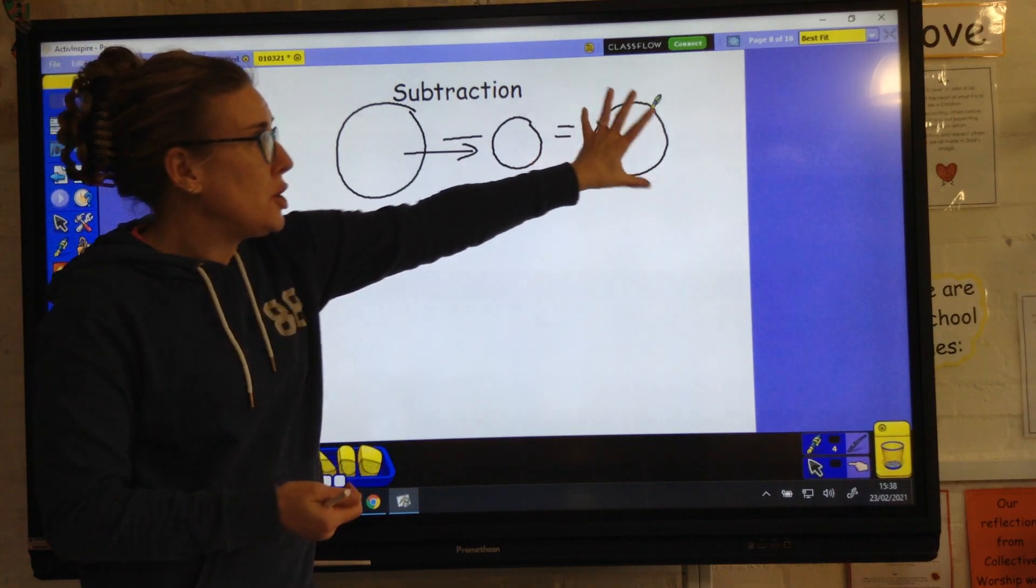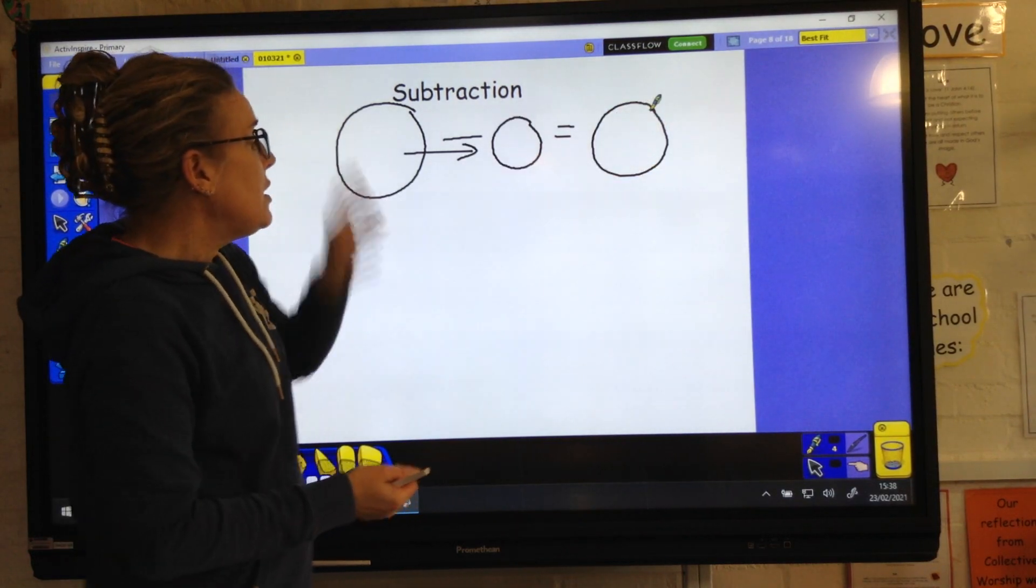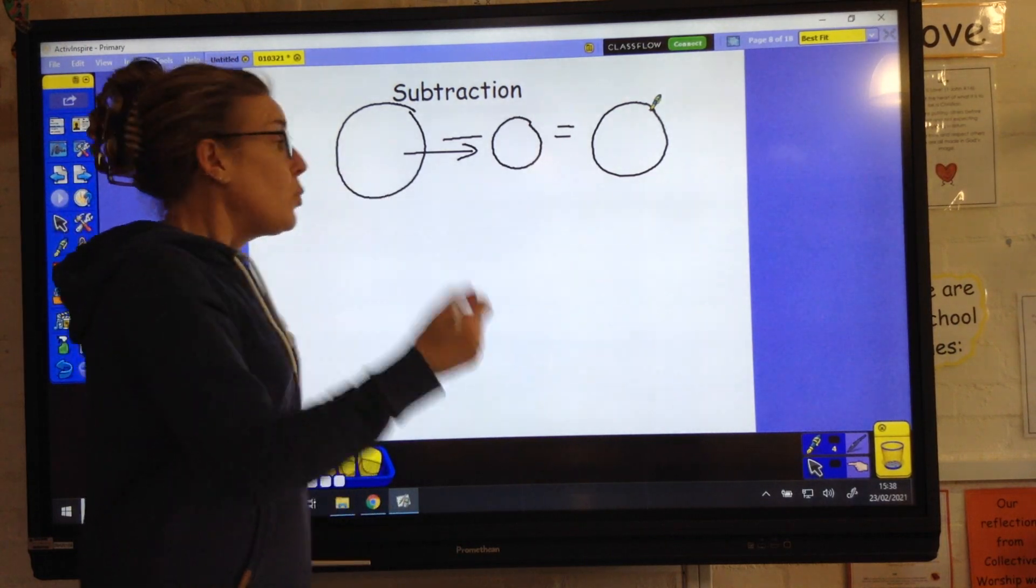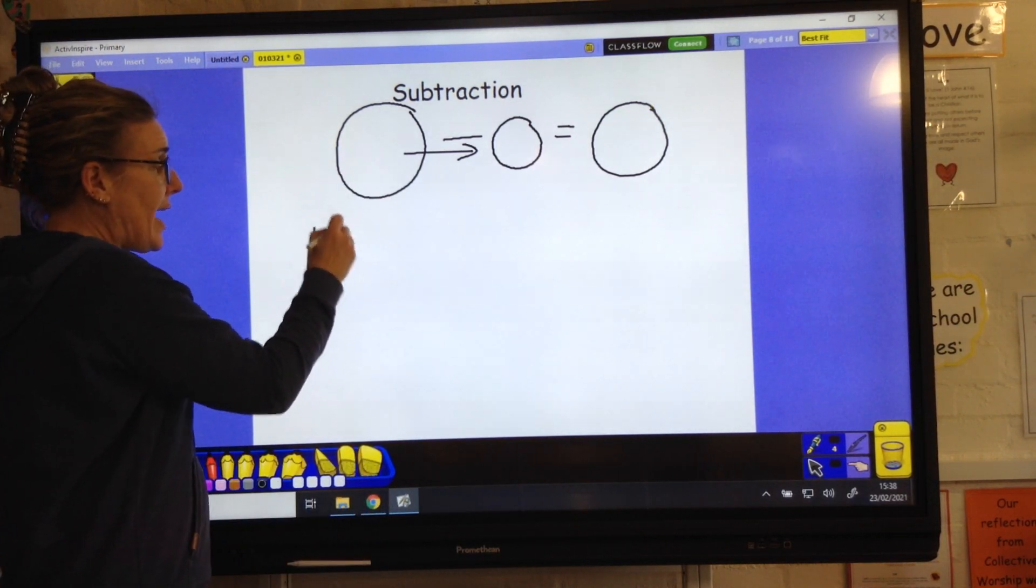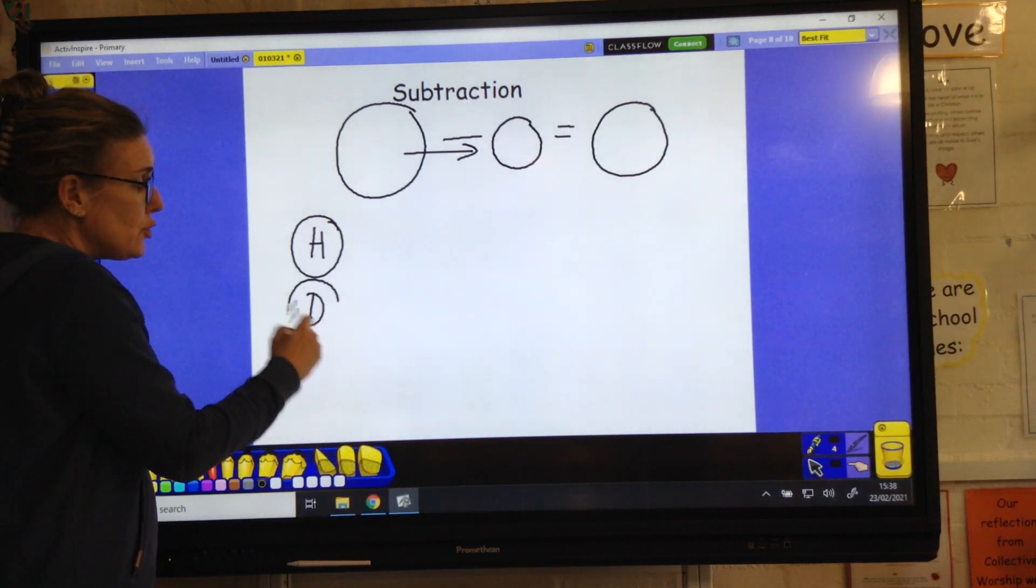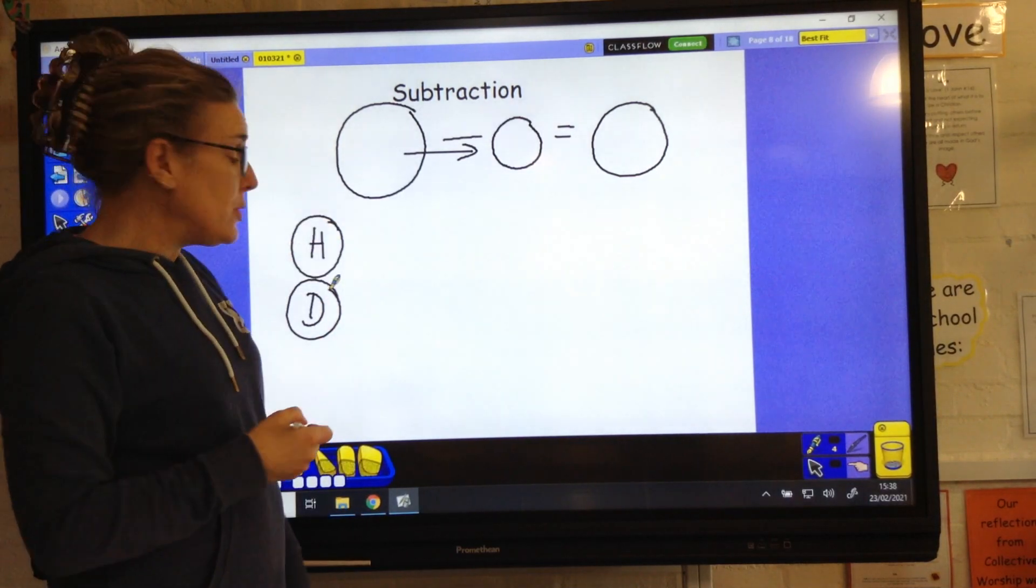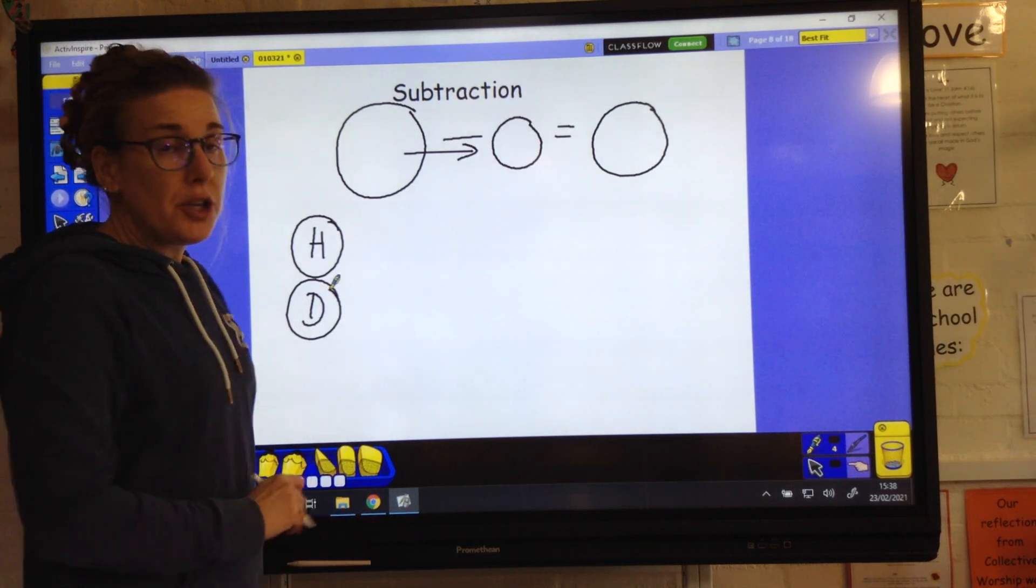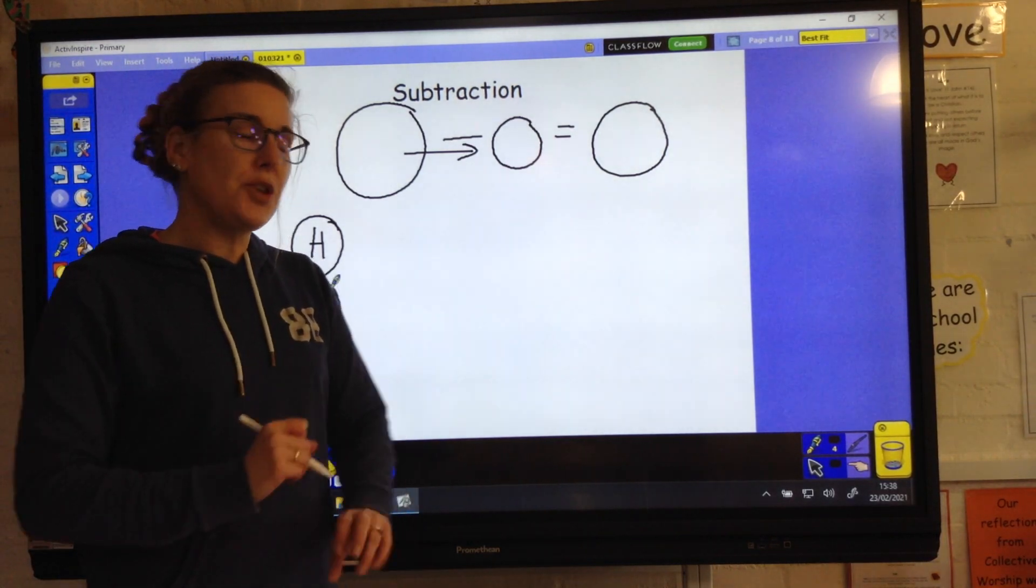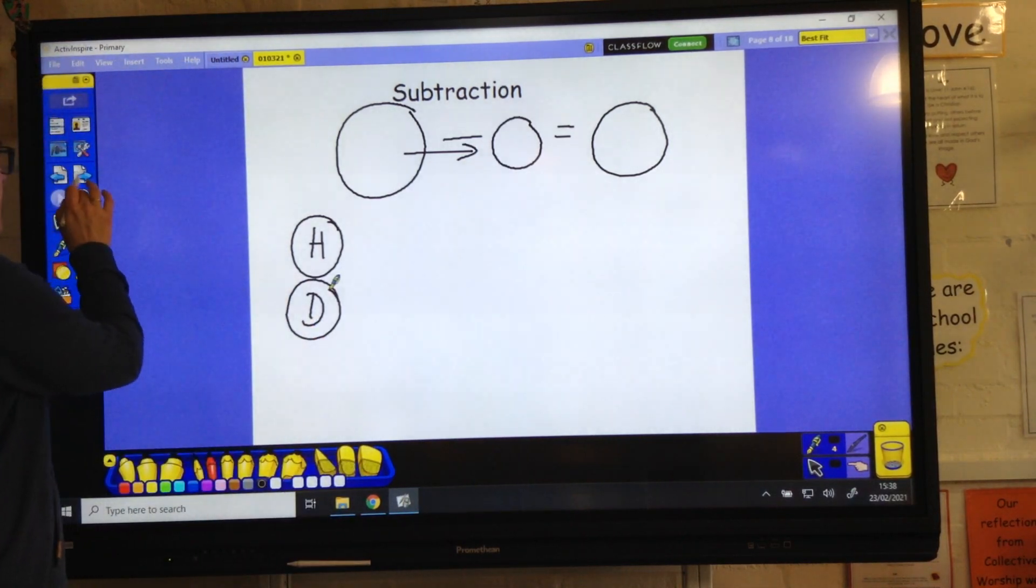In year 2, our answer is always smaller than the number that we started with. When we're subtracting, we might be able to do these in our head. Sometimes we can do that. We might need to draw the dienes out. You might use a number line. It doesn't matter as long as you are accurate and you get the right answer.